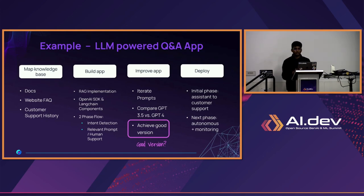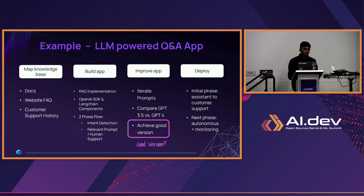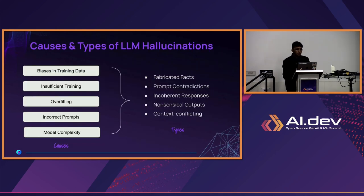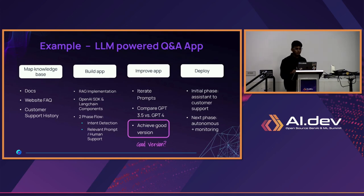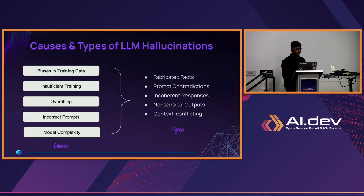Once you see your application is working fine, you deploy it. The next phase is making it autonomous and monitoring how your app is performing, then improving it over time. This was a basic overview of an LLM-powered Q&A app. Now we'll talk about hallucination.